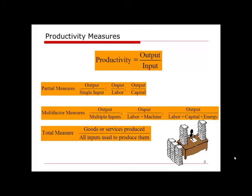Depending on what we are trying to study, this measure can be a partial measure where we only consider a single input in the calculation — it can be labor, capital, or material. This measure can also be a multi-factor measure where multiple inputs are considered, such as labor plus machine, or labor plus capital plus energy. Or, we need to calculate all inputs if we want to get the total productivity measure.